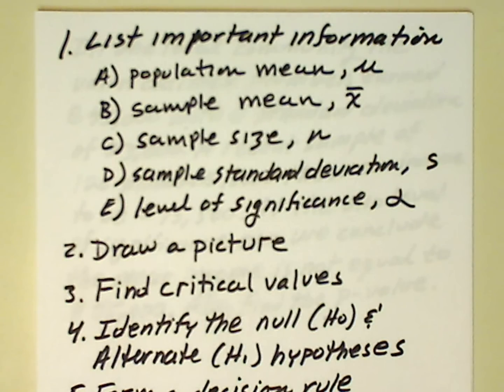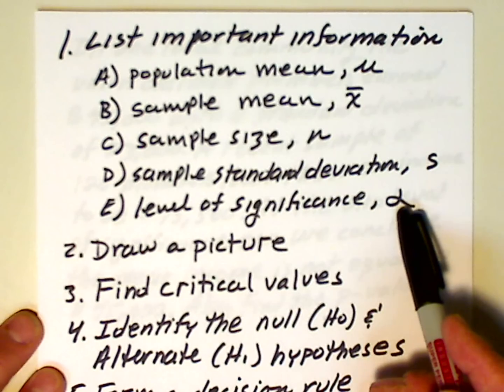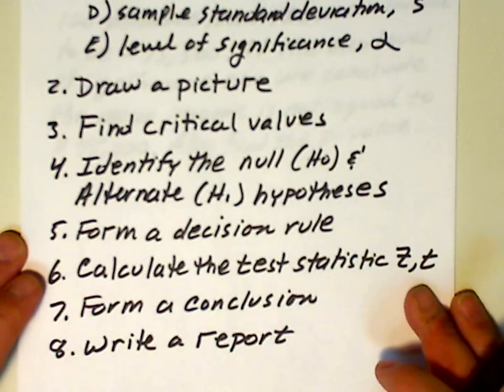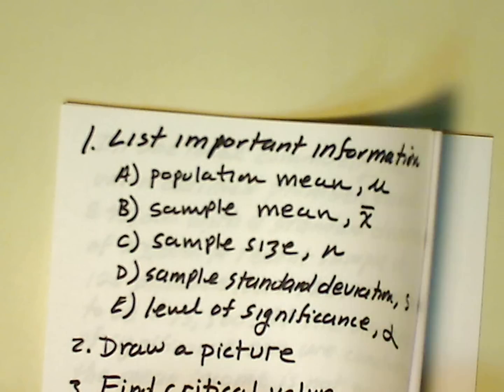In order to do this, we have to follow some steps, and I've written them out for you all. We need to list the important information, such as the population mean μ, sample mean x̄, sample size n, sample standard deviation s, and the level of significance α. We need to draw a picture, which is going to keep things clear for us from a visual perspective. We need to find the critical values, which are the specific points under the curve that we're interested in. We need to identify the null and alternate hypotheses, H₀ and H₁, respectively. We need to form a decision rule, which tells us under what conditions we reject the null hypothesis. We need to calculate the test statistic, z or t, which is going to tell us whether indeed we reject or don't reject the null hypothesis. And then we need to form a conclusion and write a few sentences about that conclusion.